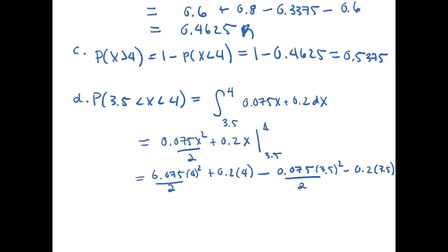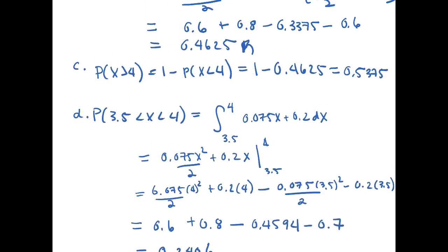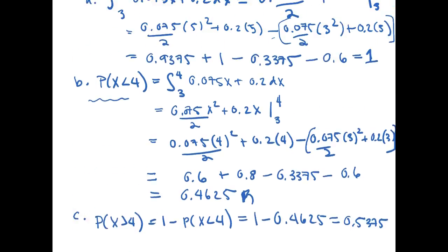And so what do we get for that expression? Well if we plug in these values to a calculator or calculate it by hand, we find that 0.075 over 2 times 4 squared is equal to 0.6. This is then equal to 0.8 minus 0.4594 minus 0.7. So if we add those values together, we get 0.2406. And that is the probability that x is between 3.5 and 4.